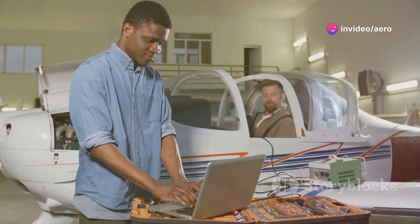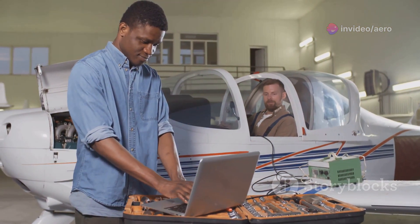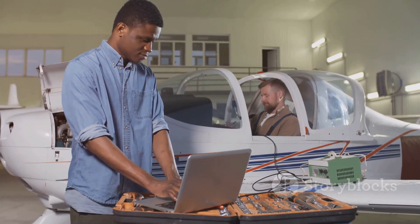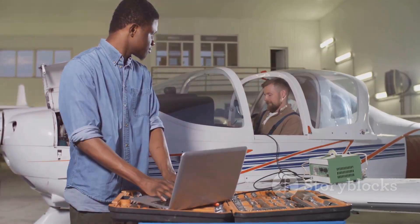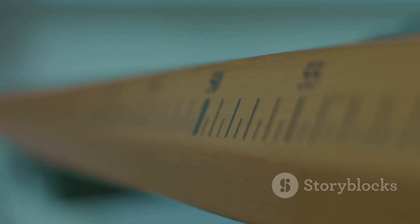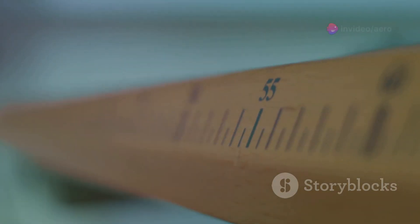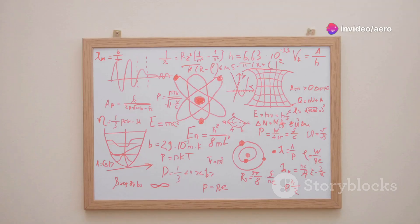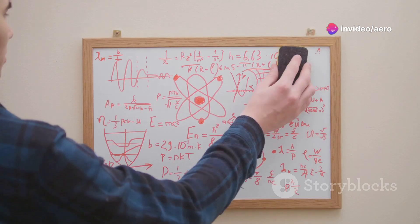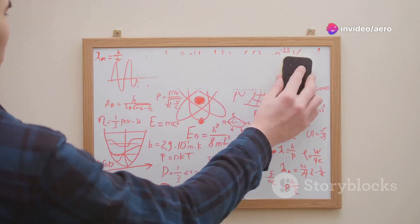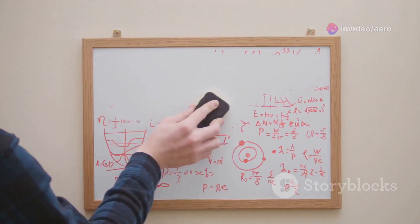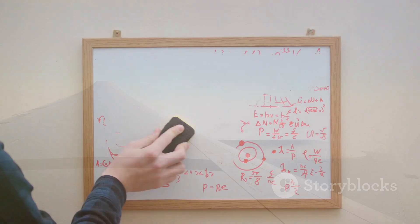Another system commonly used, particularly in the United States, is the imperial system. It employs units like feet for length, pounds for force, and slugs for mass. Understanding the different units and their conversions is crucial for interpreting aerodynamic data and performing accurate calculations.